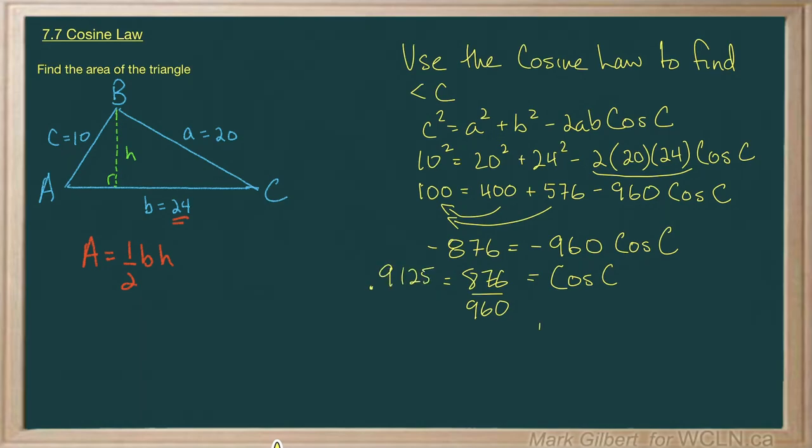So to find C, which we kind of know what that is now, we do the inverse cosine of 0.9125 and we get C equal to 24.15 degrees. So that's this angle.